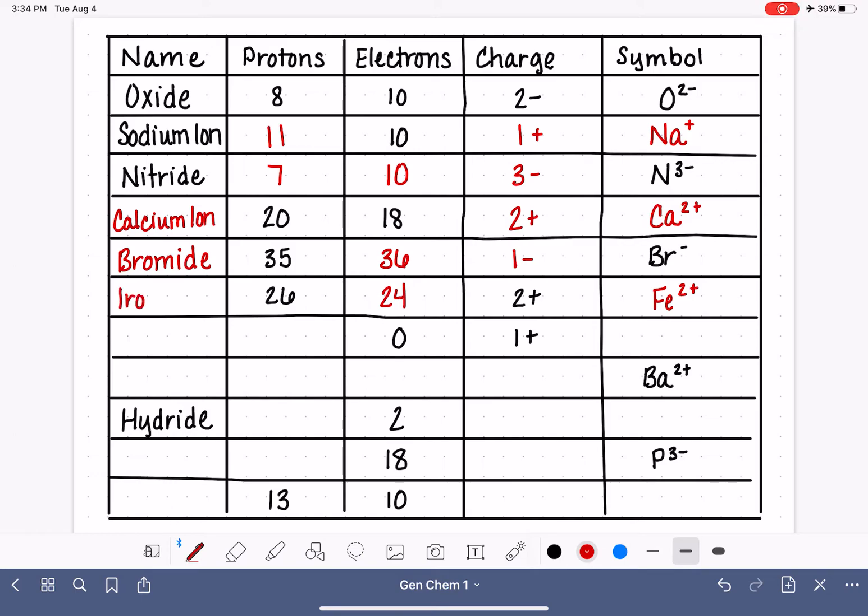So the symbol here is Fe with a 2 plus. And for now, we're just going to call this the iron ion. We do want to let you know that we are going to have to make some changes to the way that we're naming this ion. We'll deal with that in a few videos. It's not just simply iron ion. We're going to need to add some more information in here, but this is good enough for now.